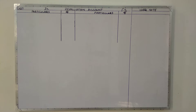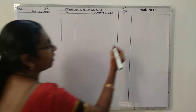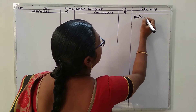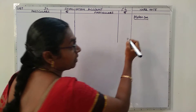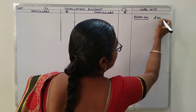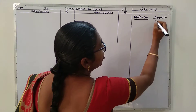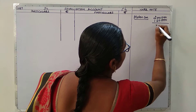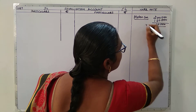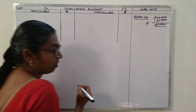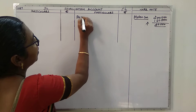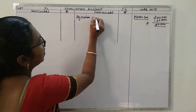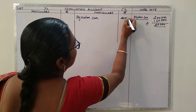Now we are preparing the revaluation account. Motor car is currently valued at two lakhs but in the balance sheet it is given as one lakh sixty thousand. So there is an increase of forty thousand in value, and we take it to the credit side - by motor car, forty thousand.